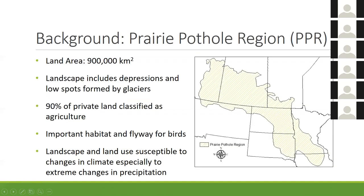My overall area of interest is the prairie pothole region. It is about 900,000 square kilometers, covering North and South Dakota, Minnesota, some of Iowa, Montana, and three Canadian provinces. What makes the landscape unique is it's dominated by depressions and low spots that were formed during the last glaciation period.